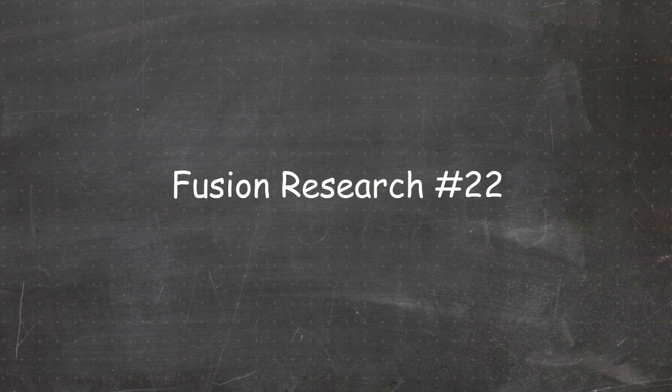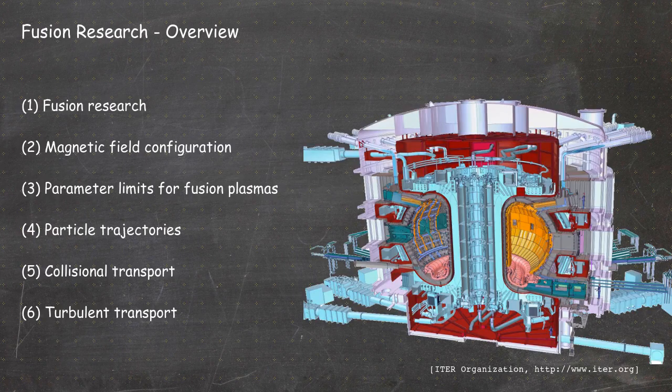Hello everybody and welcome to video number 22 of the online version of the fusion research lecture. We are still in chapter 4. In the last video we learned about banana orbits and banana particles, and in this video we will talk about another important result which comes from these banana particles - the bootstrap current.